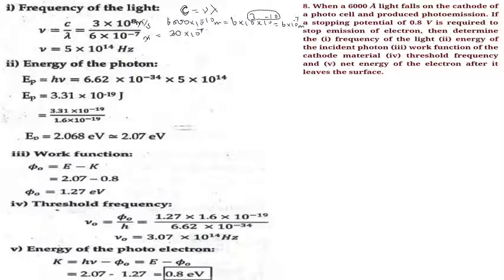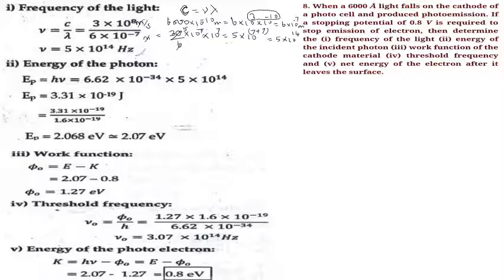Using λ = 6000 Angstrom = 6×10⁻⁷ m and c = 3×10⁸ m/s, we get ν = c/λ = 3×10⁸ divided by 6×10⁻⁷, which gives ν = 5×10¹⁴ Hz. This is the frequency of the incident light.